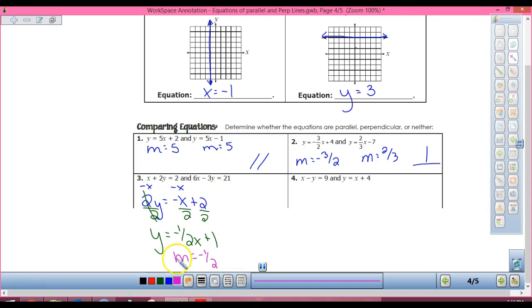Alright, now I'm looking at this one up here. What do I do first? Subtract 6x. So I have negative 3y equals negative 6x plus 21. Now what? I divide by negative 3. Y equals positive 2x minus 7. So my slope is two. My lines are perpendicular.